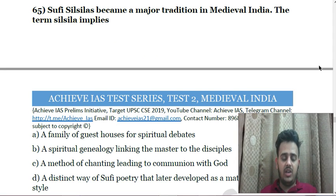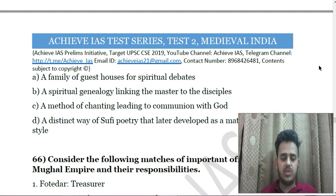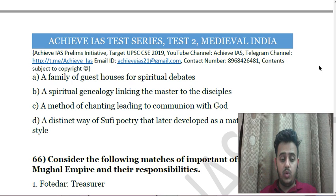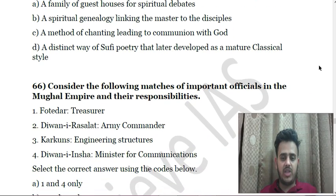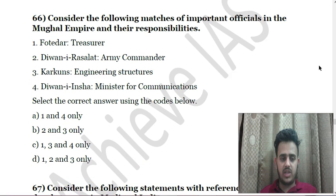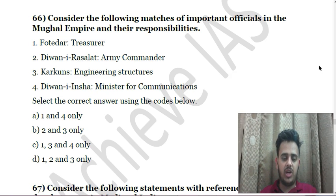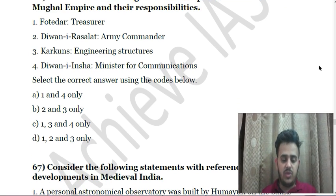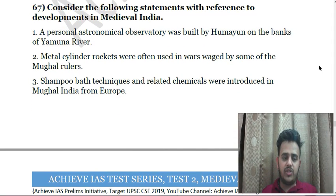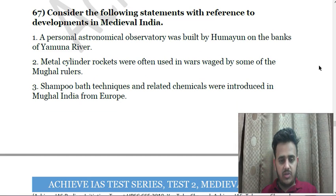Next: Consider the following with reference to forest society and tribes in Mughal India — First, the forest tribes often supplied elephants to the state as tribute; Second, the forest provided gum lac, which was a major export item overseas from India; Third, the state banned private commercial agriculture in forest regions to preserve the pristine ecology. Next: Sufi Silsilas became a major tradition in medieval India. The term 'Silsila' implies — A. A family of guest houses for spiritual debates; B. Spiritual genealogy linking the master to disciples; C. A method of chanting leading to communion with God; D. A distinct way of Sufi poetry that later developed as a classical style.